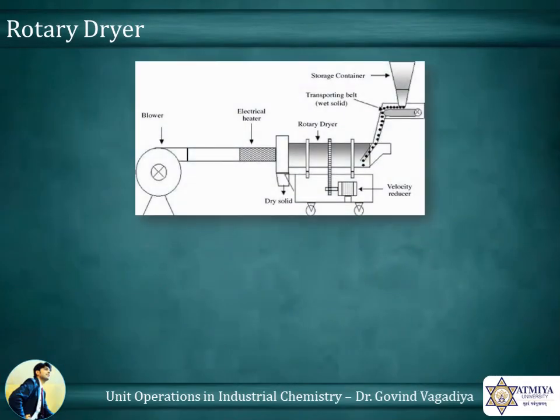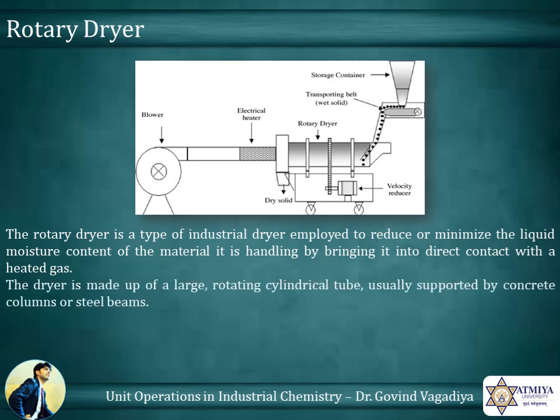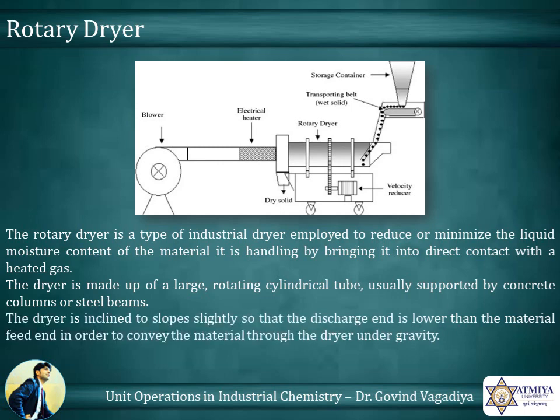The rotary dryer is a type of industrial dryer employed to reduce or minimize the liquid moisture content of the material it is handling by bringing it into direct contact with a heated gas. The dryer is made up of a large rotating cylindrical tube, usually supported by concrete columns or steel beams. The dryer is inclined to slope slightly so that the discharge end is lower than the material feed end, in order to convey the material through the dryer under gravity.